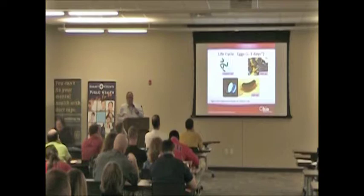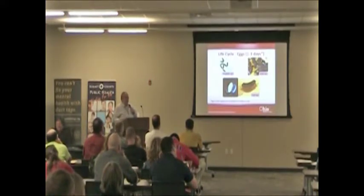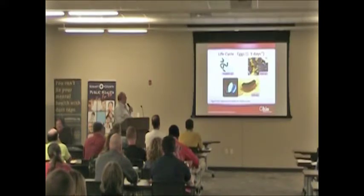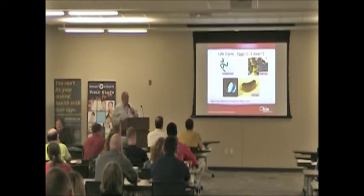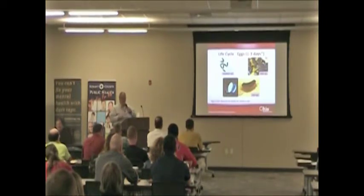Different types of mosquitoes lay their eggs differently. Anopheles mosquitoes just sprinkle their eggs on the water — they hover and drop them. Their eggs have little air floats on the side to hold them suspended at the surface. Aedes mosquitoes, on the other hand, tend to lay their eggs either in a depression where there will be water, or just above the water line in a tree hole or container. When it rains, the water level rises, the eggs are inundated, and they hatch.